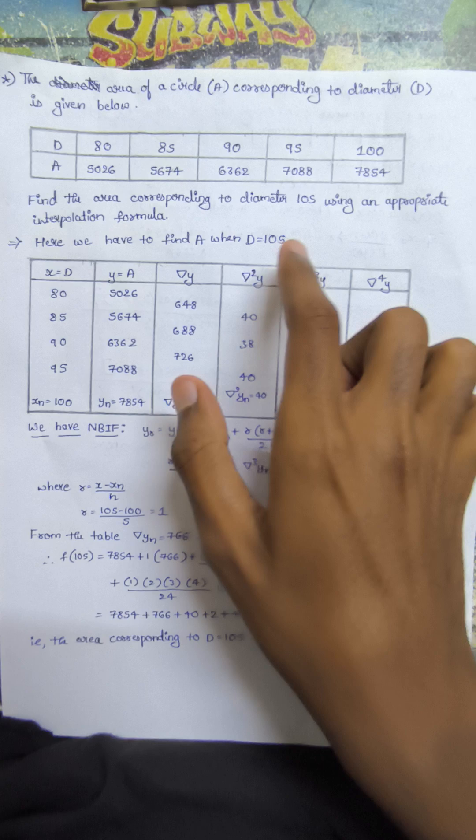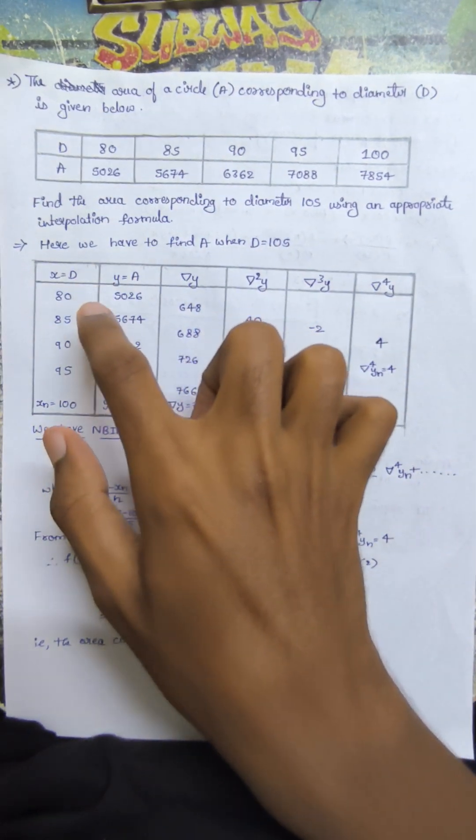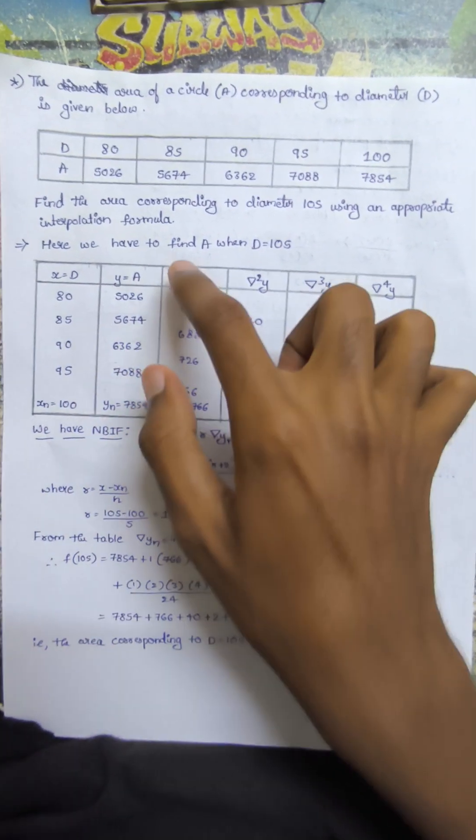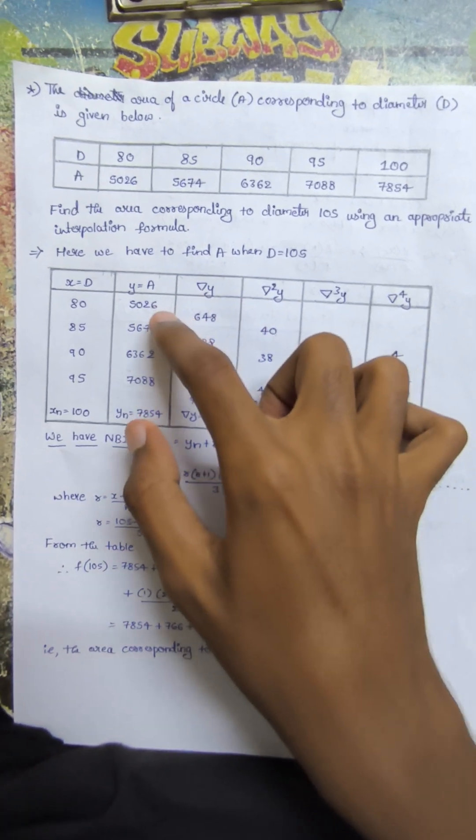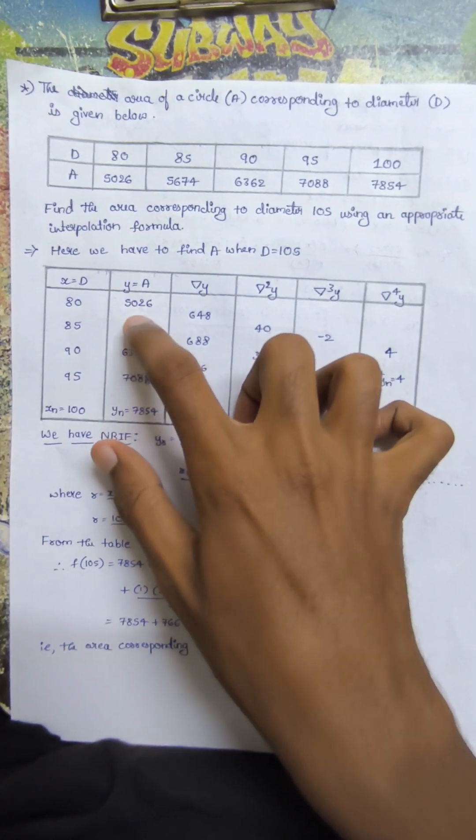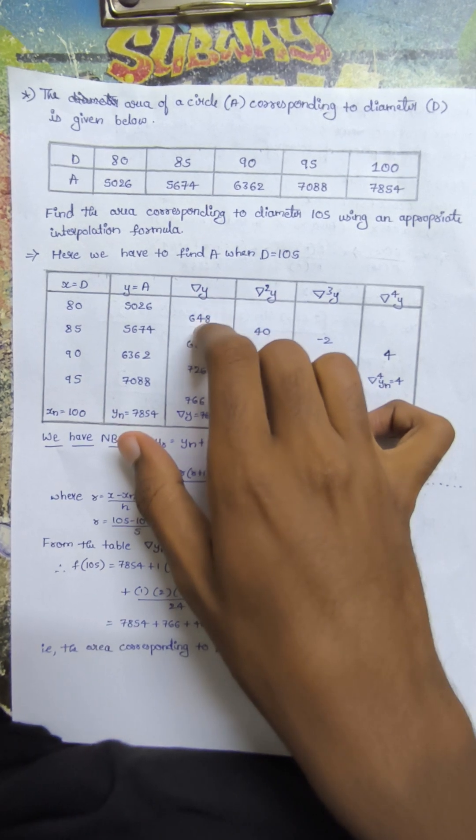We have to find A when D equals 105. X values are 80, 85, 90, 95, 100. Y values are the above given values. Now we calculate the differences: 5674 minus 5026 gives del y.